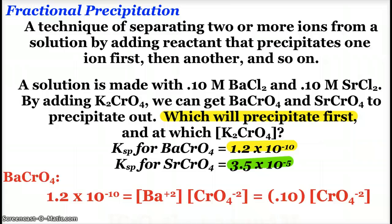If they're super close together, then the precipitation would occur pretty much simultaneously, and that wouldn't help us at all as far as separating the ions. So here we see 1 times 10 to the negative 10th for barium chromate, 3.5 times 10 to the negative 5th for strontium chromate.